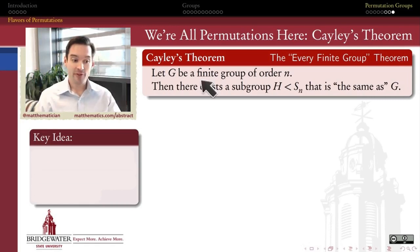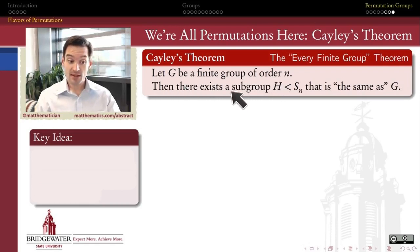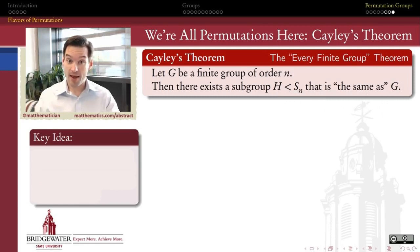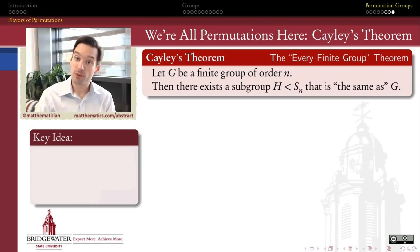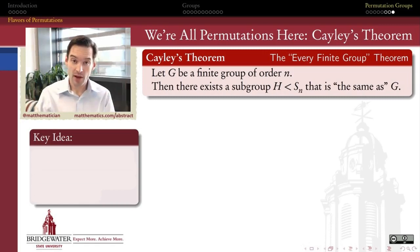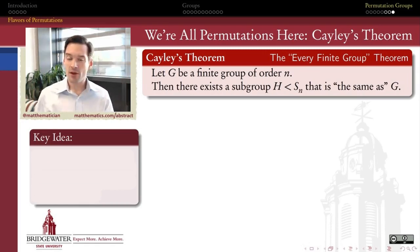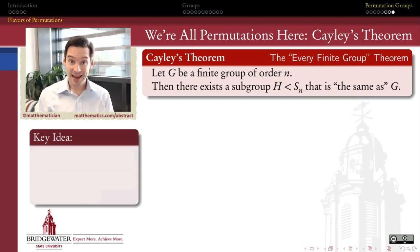It says that if I have a finite group of order n, then there exists a subgroup of Sn, the symmetric group on n symbols, and that subgroup is the same as G. We're not going to come up with a formal proof of this right now because we've still yet to formalize this notion of sameness in a way that's going to be useful for a proof. We're going to do that in the next couple of chapters. But what I want to do is give an argument for why this theorem is true using Cayley tables.